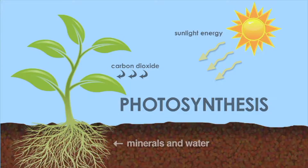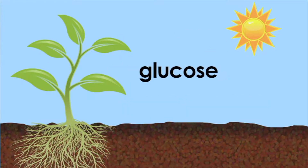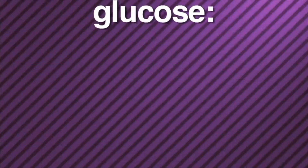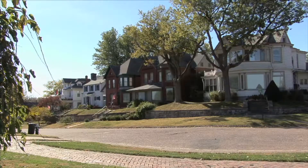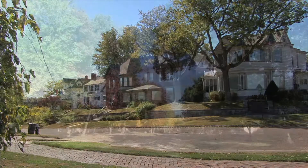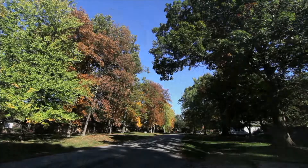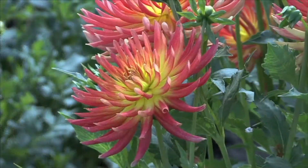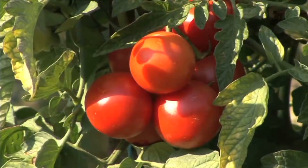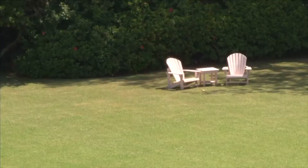The food plants produce is called glucose. Glucose is the food that gives plants energy to live. Look around your community — you'll find producers everywhere: trees, bushes, flowers, vegetables, and grass. They're all producers.